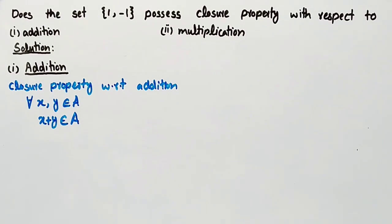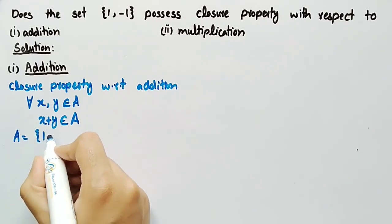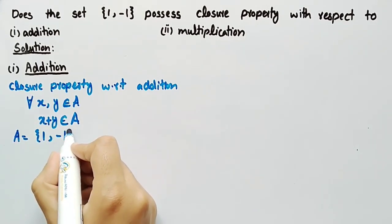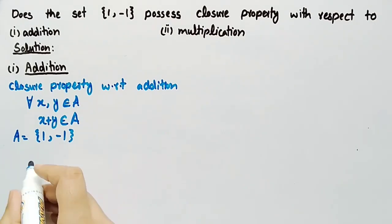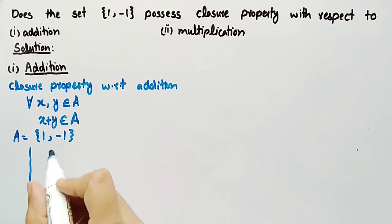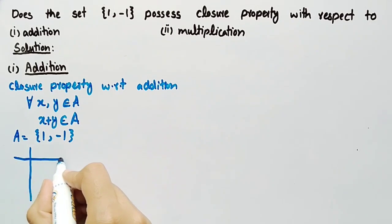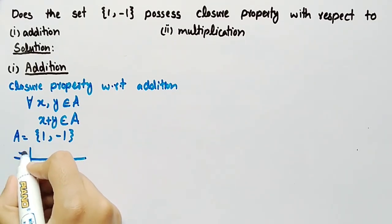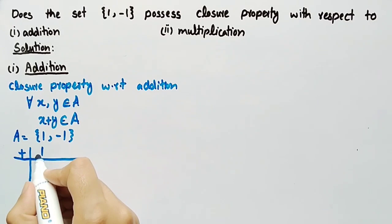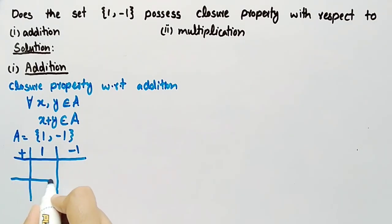Now, let's name the given set as A. So we can write A = {1, -1}. We will draw a table so that we can add each element of A with the other elements of A. Here we will write 1, -1 and 1, -1.